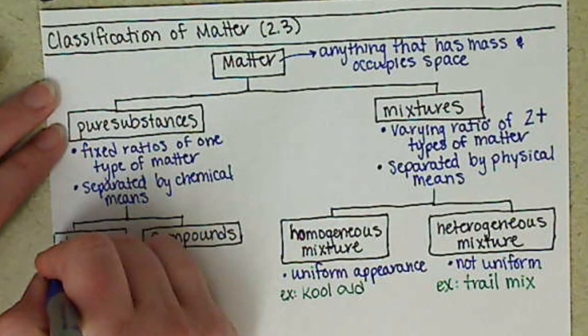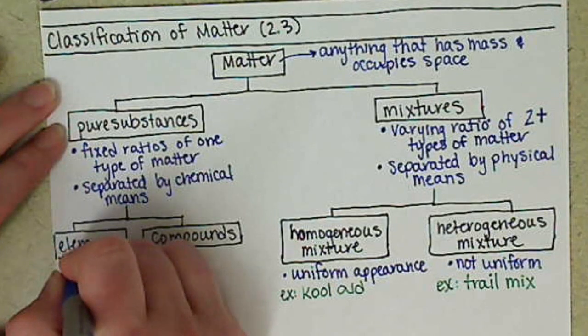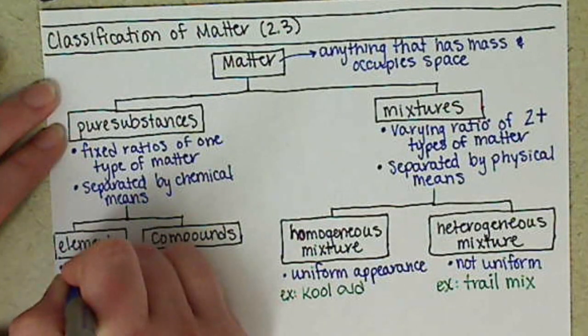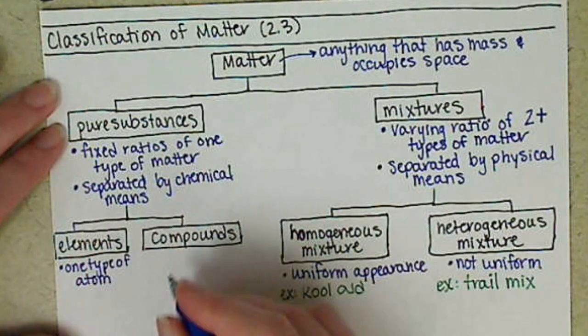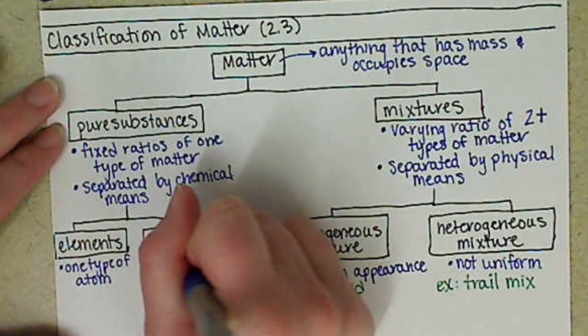For our elements, these are basically pure substances that are or contain one type of atom. Compounds are going to contain more than one type of atom.